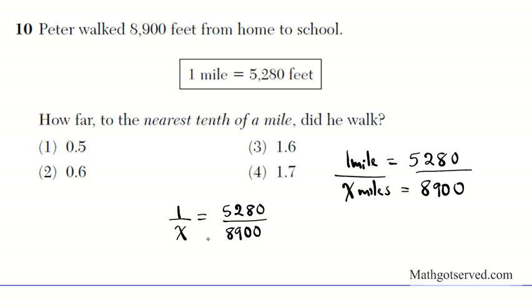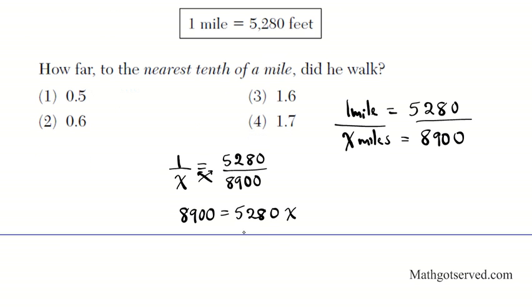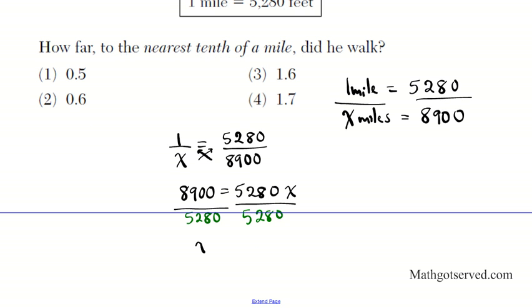To solve this, you just cross multiply, bottom to top and bottom to top. That gives us 8,900 equals 5,280x. And then to get x by itself, you divide both sides by 5,280. You're going to end up with x equals 8,900 divided by 5,280. You can compute that with the aid of a calculator.